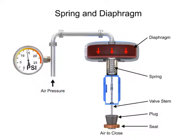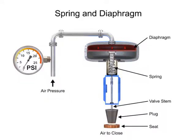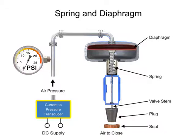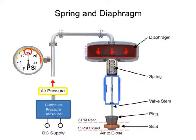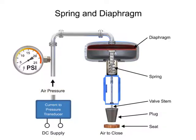With no air pressure, the restrictor is pushed upward by the spring to act as a normally open control valve. To vary the position of the restrictor and flow through the valve, a current to pressure transducer can be used to provide a 3 to 15 PSI signal to the diaphragm. At 3 PSI, the valve is maintained open, and at 15 PSI, the valve is maintained closed. Pressures between the 3 to 15 PSI range proportionally change the flow of the valve.